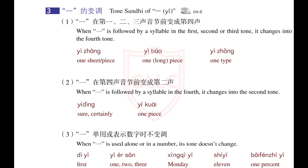一的变调 — Tone sandhi of 一: 一张、一条、一种、一定、一块、第一、一二三、星期一、十一、百分之一。